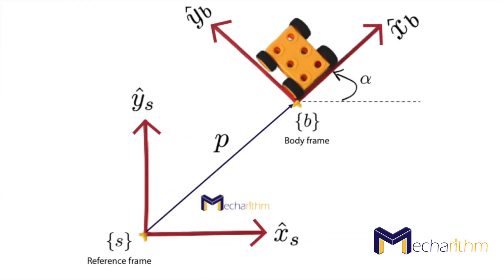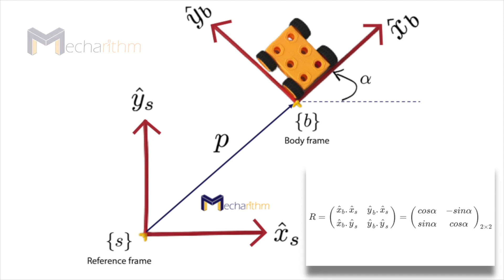One way to represent the orientation of the body coordinates in terms of the base coordinates is using a rotation matrix. The columns of this matrix are the coordinate axis of the b-frame expressed in the coordinate axis of the s-frame. The dot represents the dot product between the coordinate axes and since they are unit vectors, the dot product represents the cosine of the angle between the two vectors.